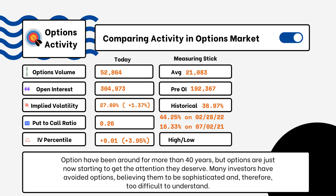When looking at put-to-call ratios, if we see anything above one, that is telling us there is more bearish sentiment in the market rather than bullish. If we see something more like 0.5 or 0.7, that tells us it's more bullish than bearish — indicating there are more calls being purchased rather than puts.